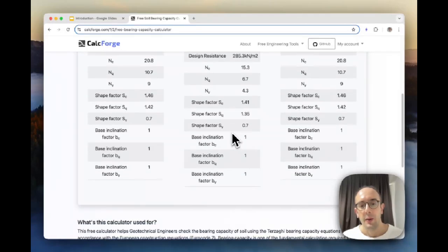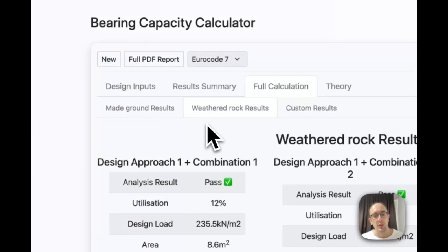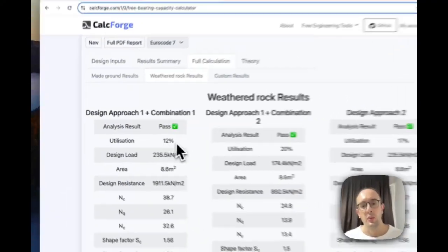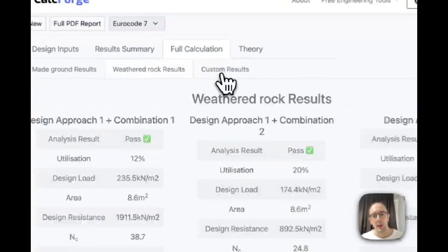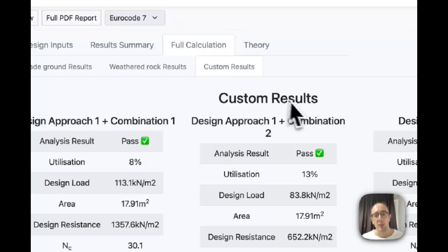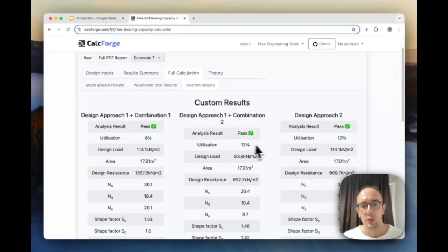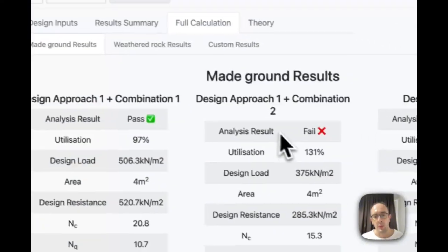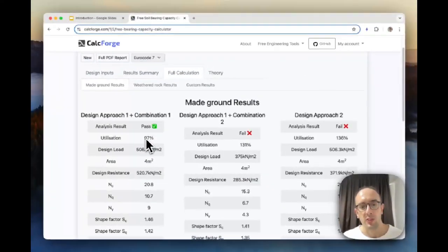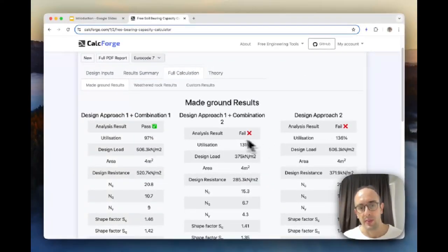And then basically you can go through the different layers. So you can see here weathered rock, see the utilization. This is actually okay, this one's not failing in the rock. And also for the custom group we created, it's also not failing for that, the utilization is fine. So it's just the made ground, even in case one it's just the limit in case two is this approach one combination two and design approach two where it's failing. But for Eurocode 7 you have to check all of these.